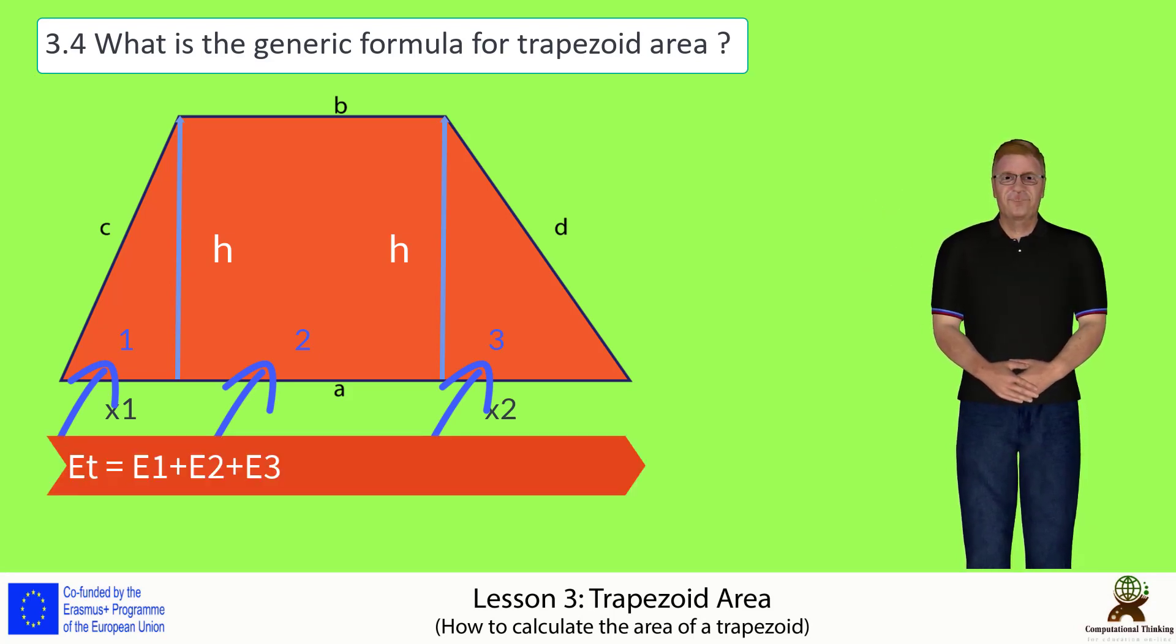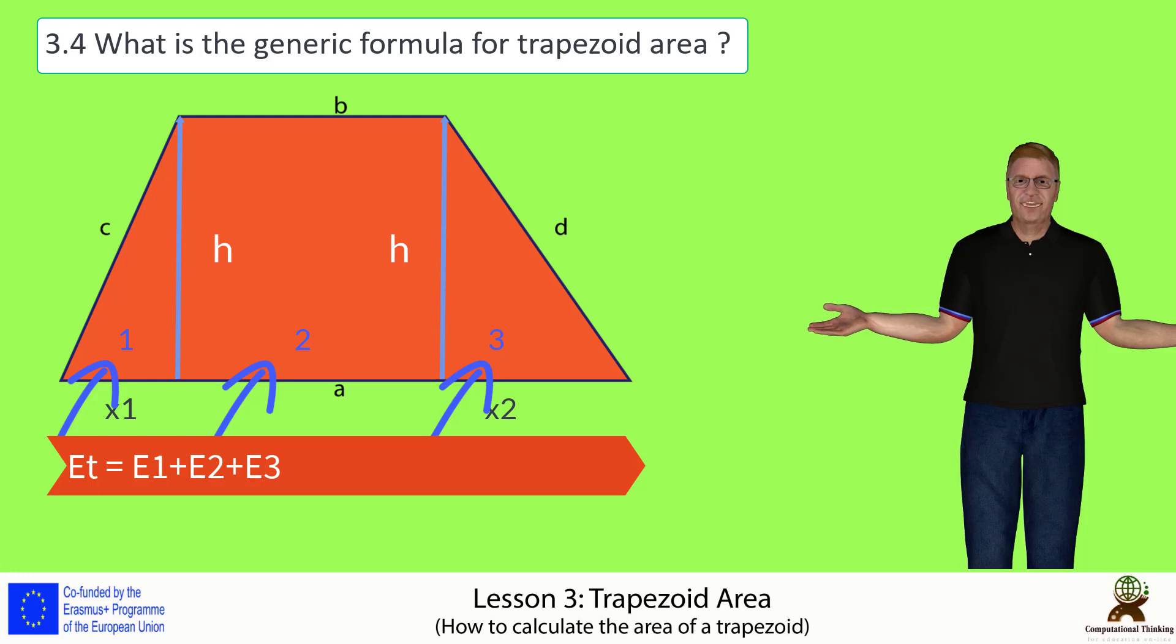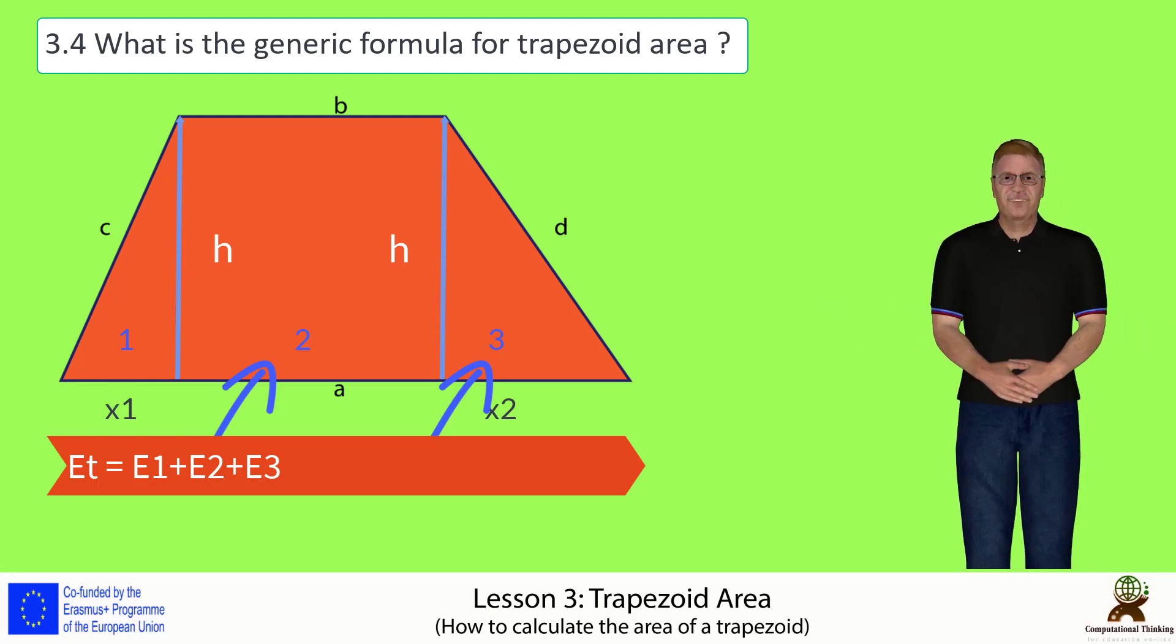Thus, the trapezoid's area is equal to the left triangle area, plus the central perpendicular rectangle area, plus the rightmost right triangle area.